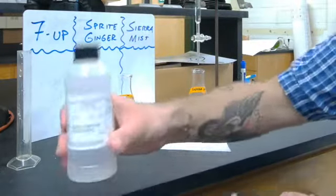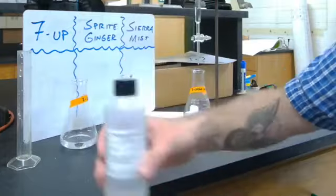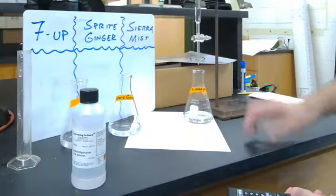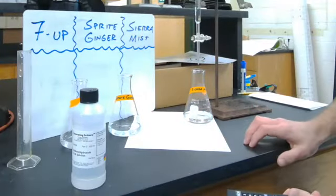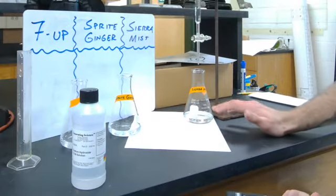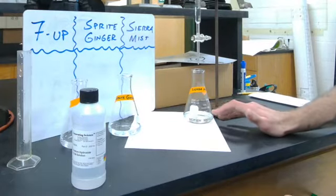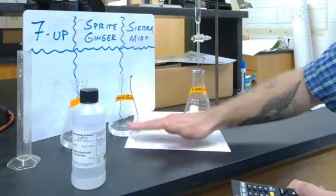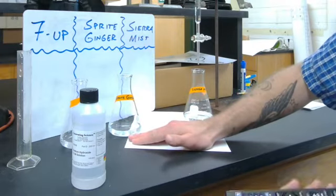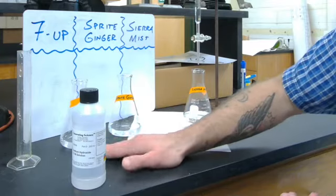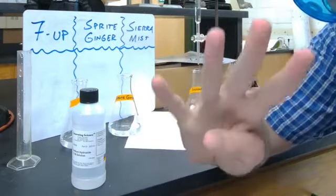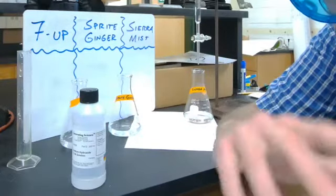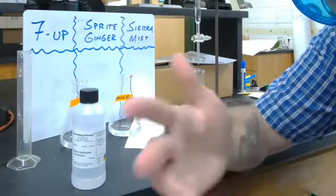And because I know the concentration of this, and because I'm going to figure out the volume of the base added to get to that equivalence point, the endpoint, I'm sorry, I'll be able to figure out the concentration of the soda because I'm using 50 milliliters of soda each time. So I'll have 50 milliliters of the Sierra Mist, 50 milliliters of the Sprite Ginger, and then 50 milliliters of the 7-Up. So we'll have three out of the four numbers to use MAVA to figure out our titration and ultimately the strength of our acid, so the molarity of the acid.